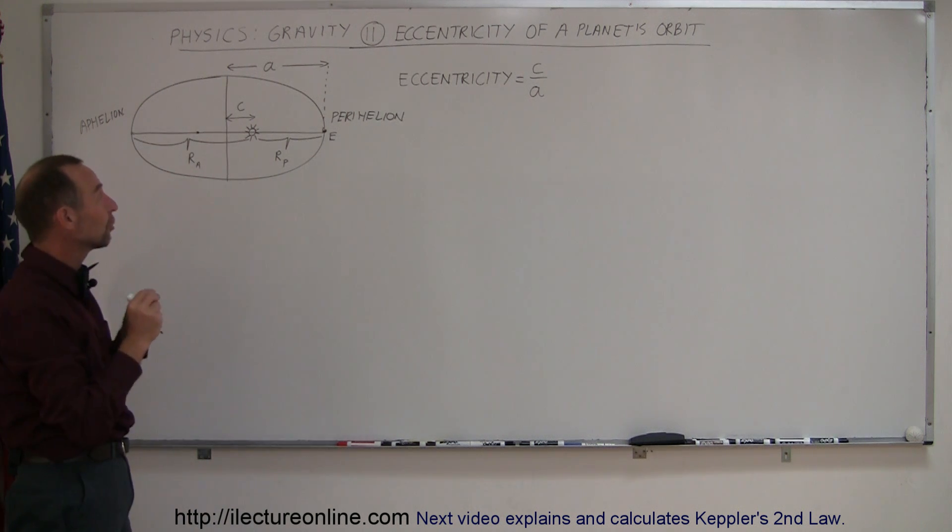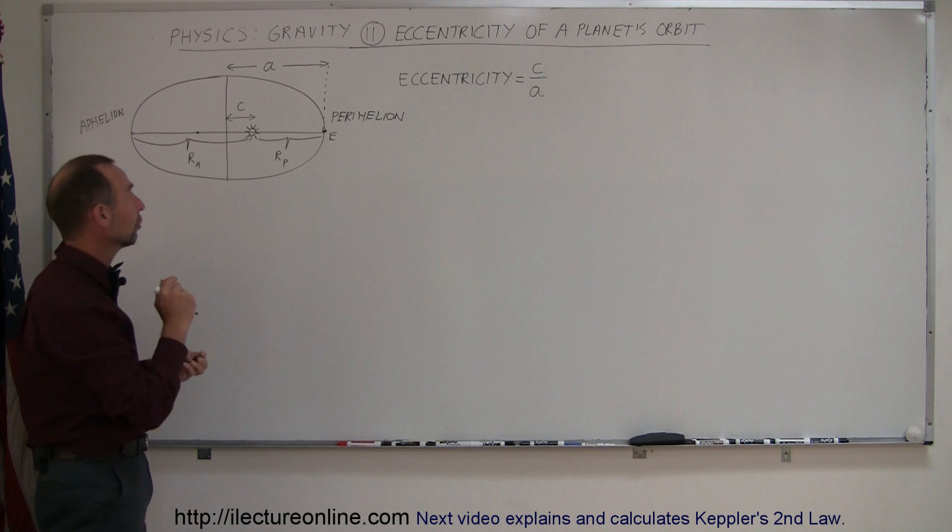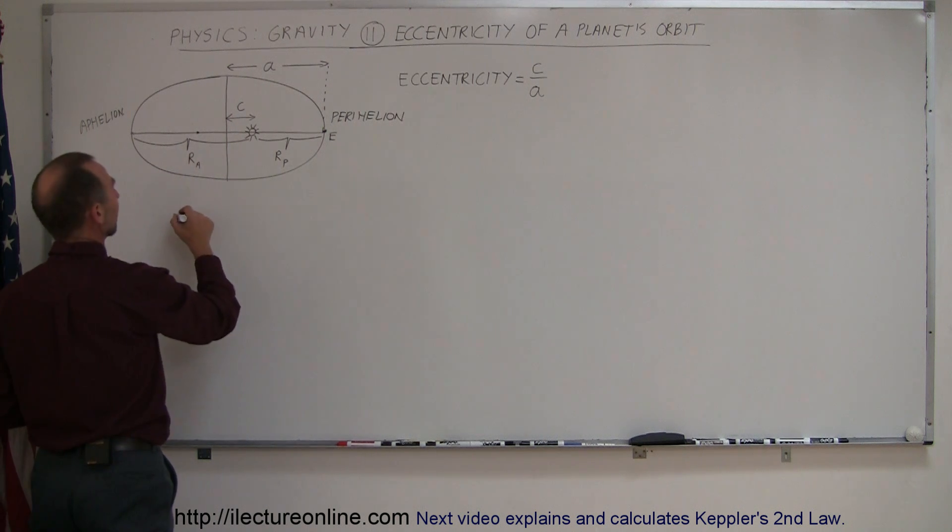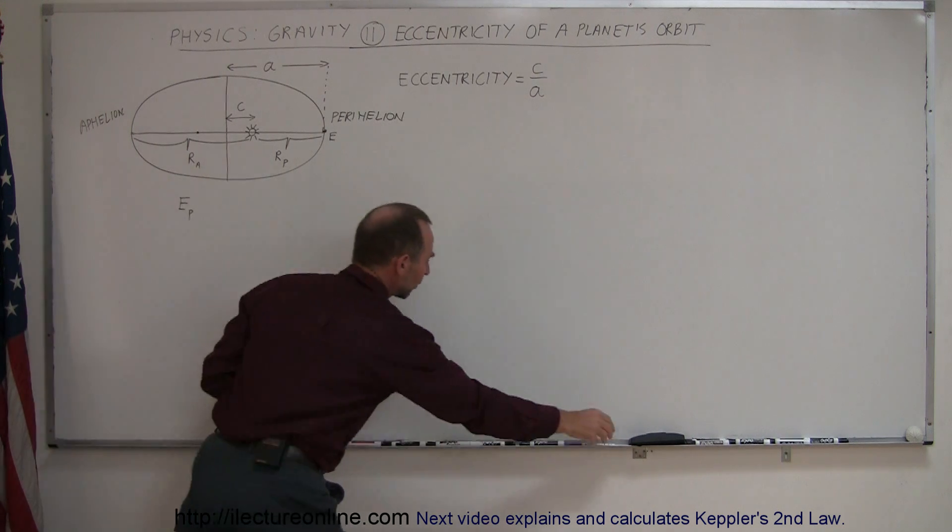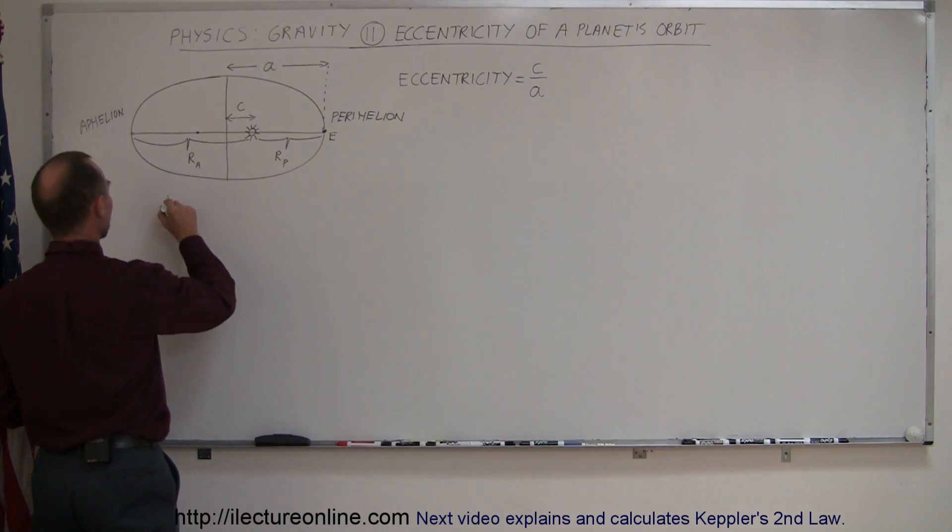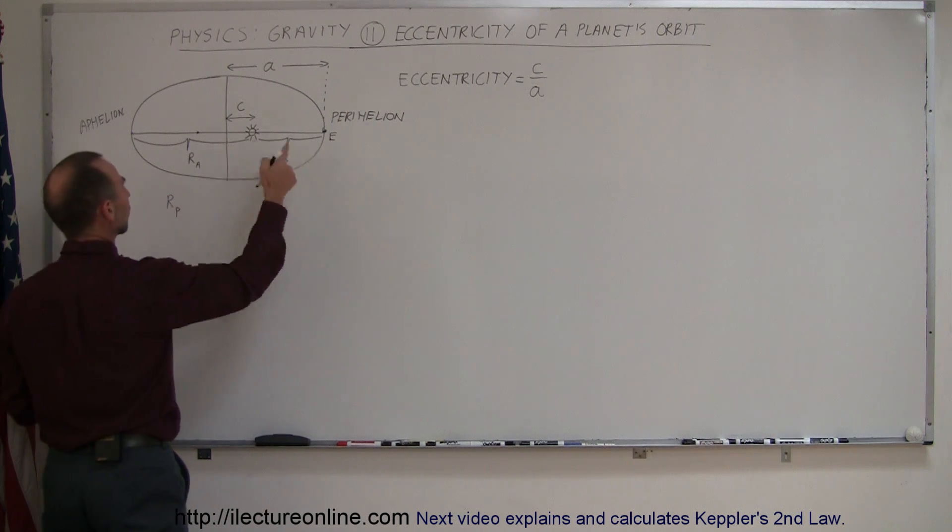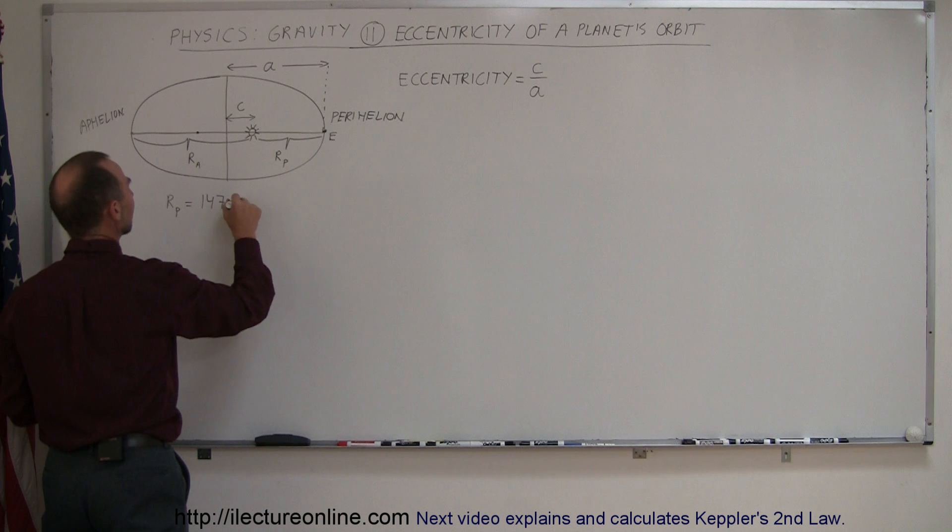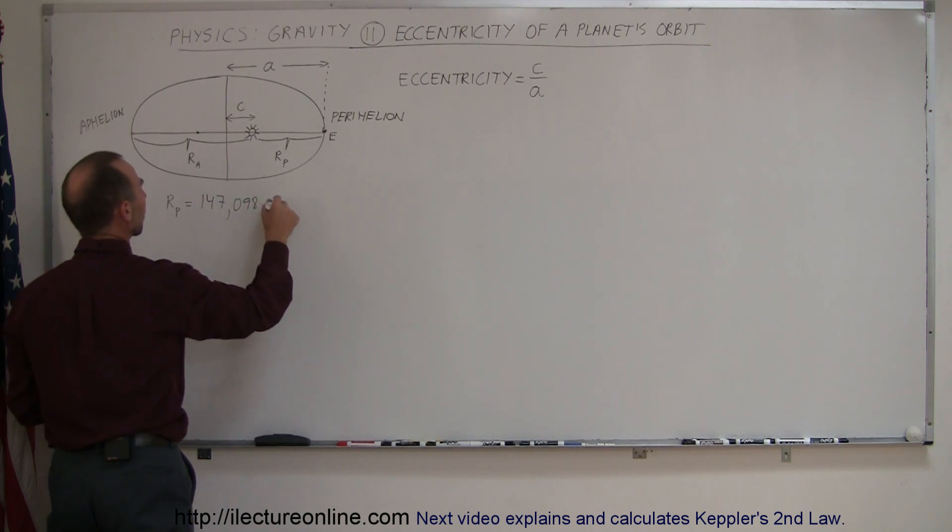We can talk about the distance the earth is from the sun at those two points. It turns out that for the perihelion, R sub P, the radius of the orbit when it's close to the sun, is equal to about 147,098,000 kilometers.